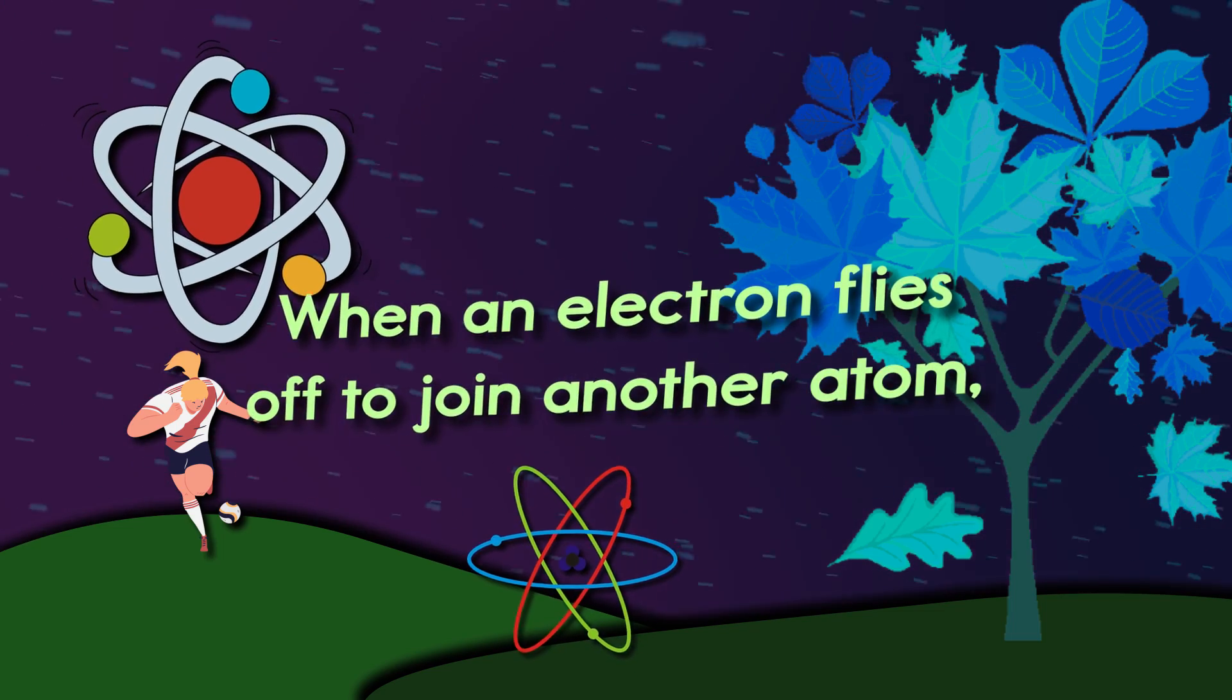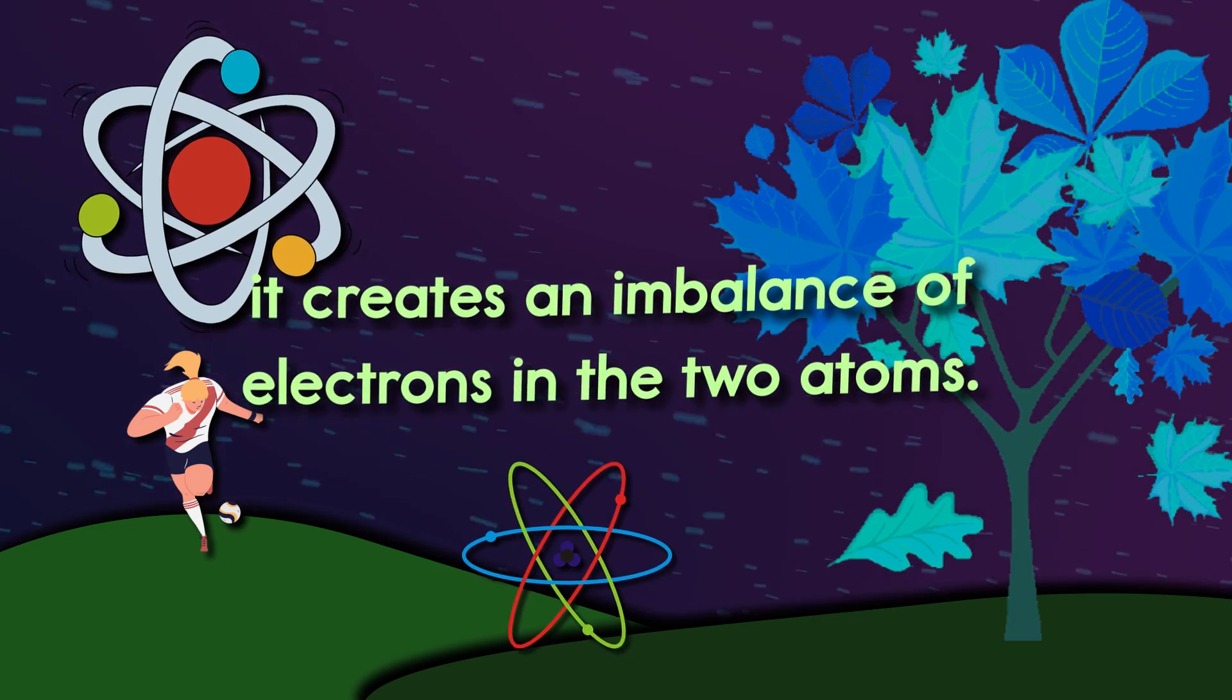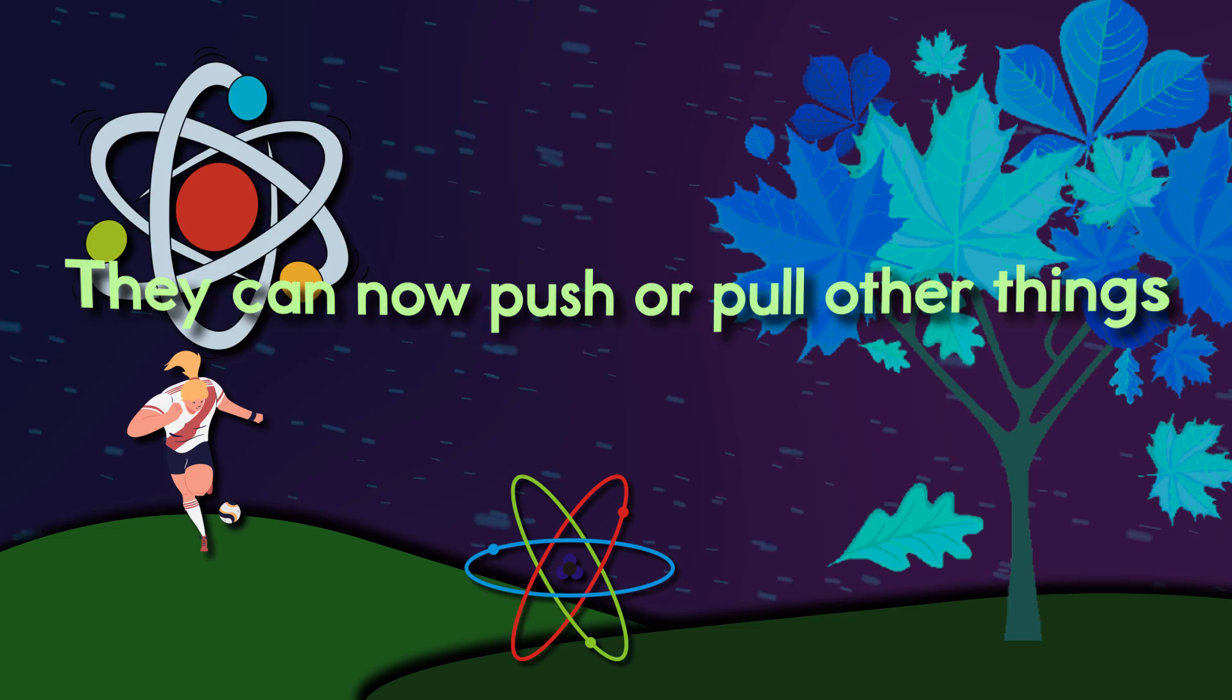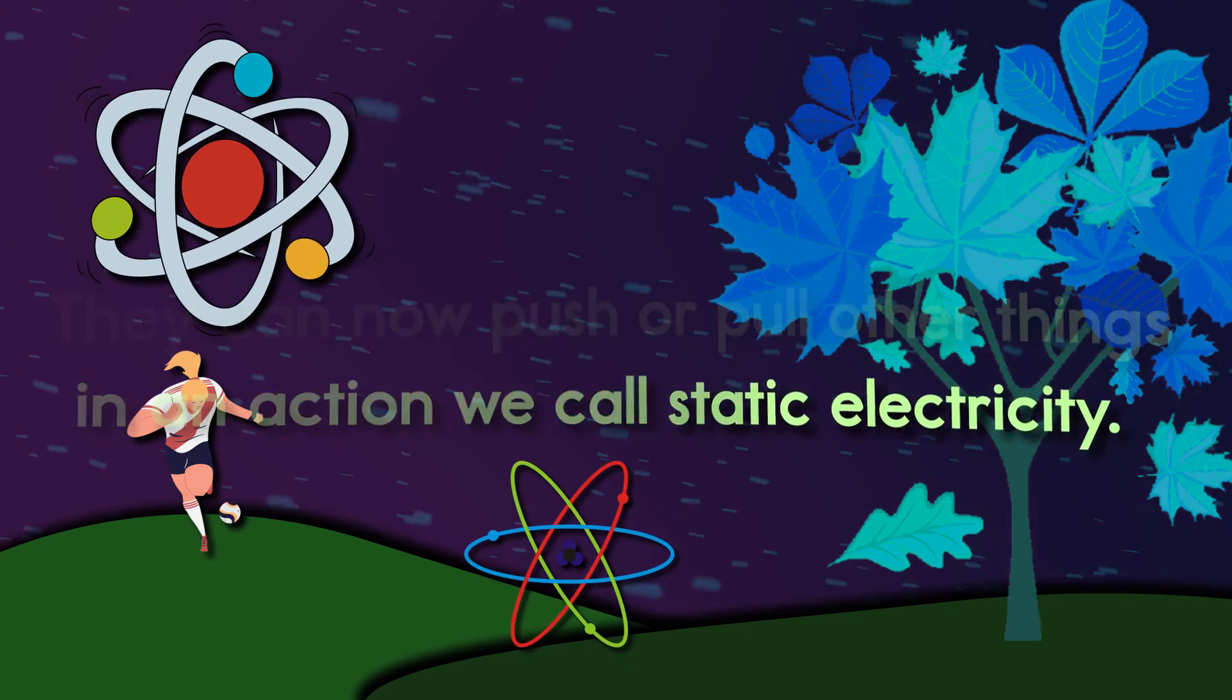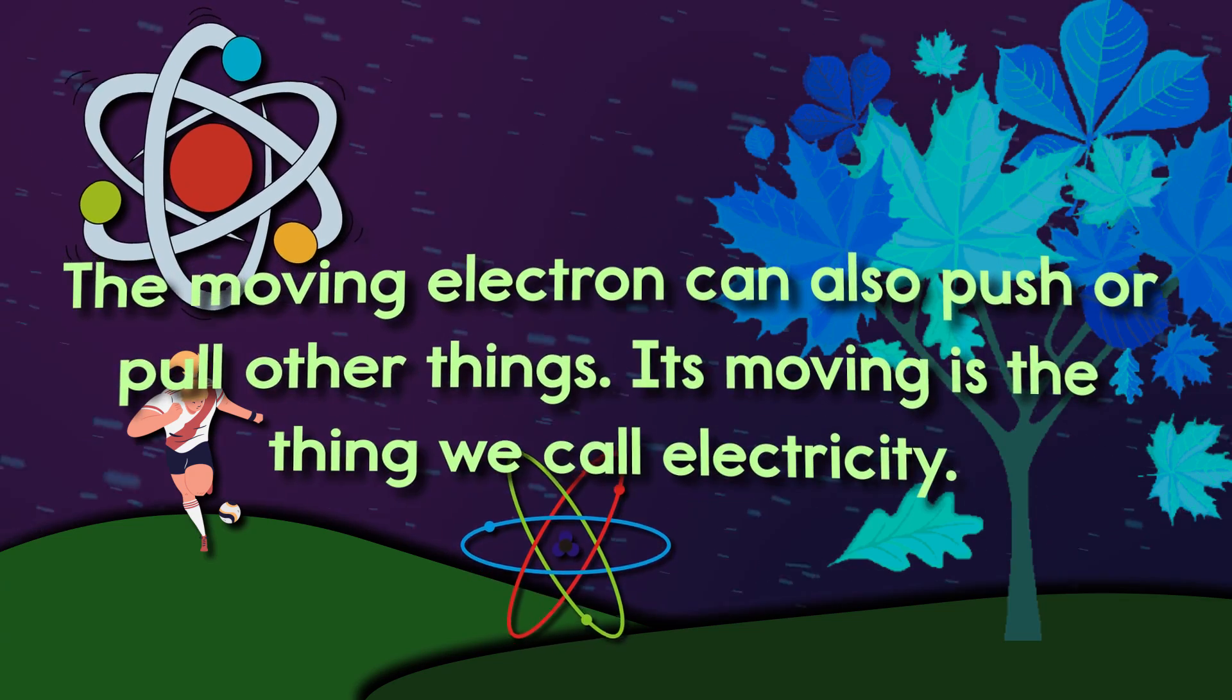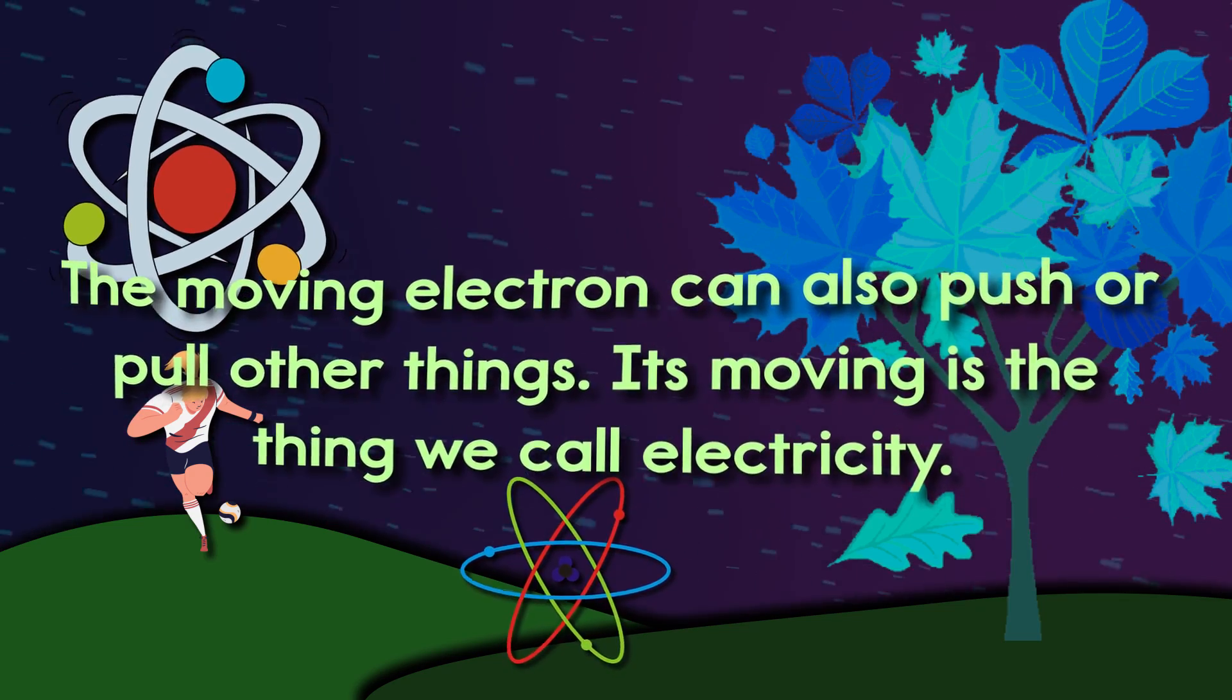When an electron flies off to join another atom, it creates an imbalance of electrons in the two atoms. They can now push or pull other things in an action we call static electricity. The moving electron can also push or pull other things. Its moving is the thing we call electricity.